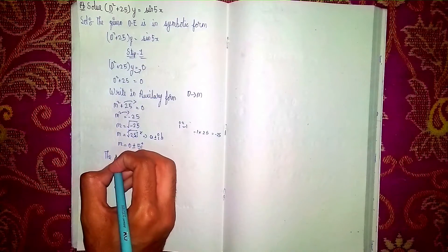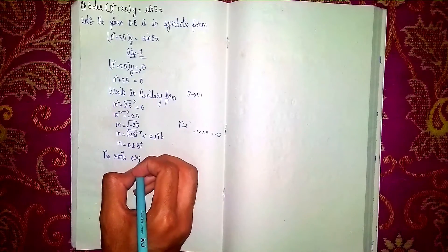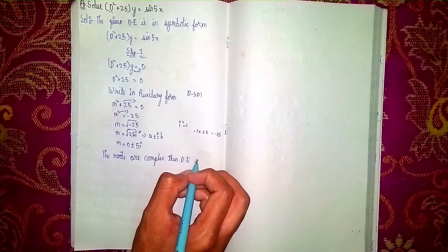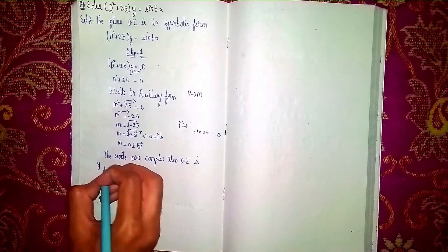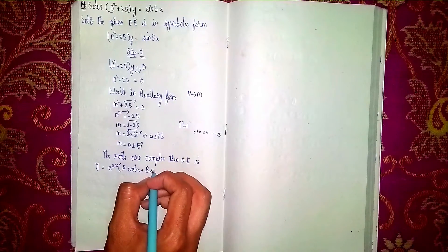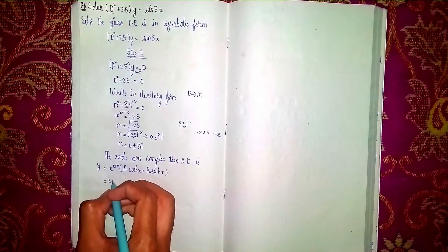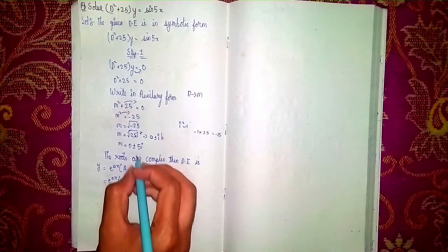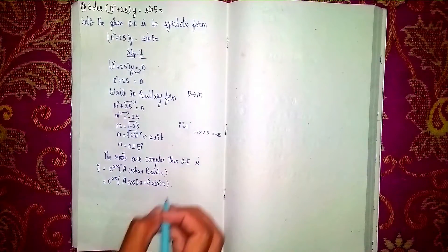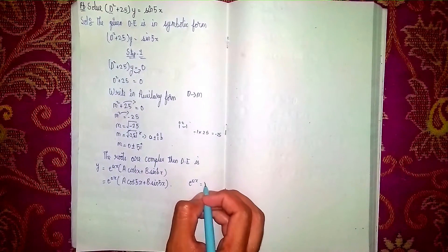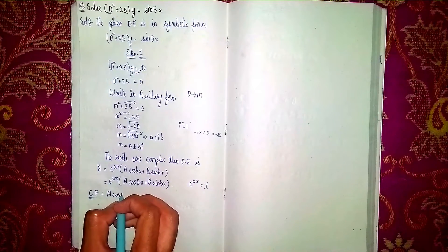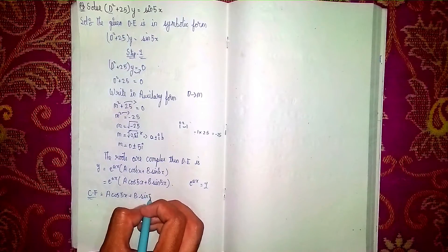The roots are complex. When roots are complex in the form a plus or minus ib, the complementary function is y equals e to the power ax times (A cos(bx) plus B sin(bx)). Here a equals 0, so e to the power 0x equals 1. Therefore the complementary function is A cos(5x) plus B sin(5x). We have completed Step 1.